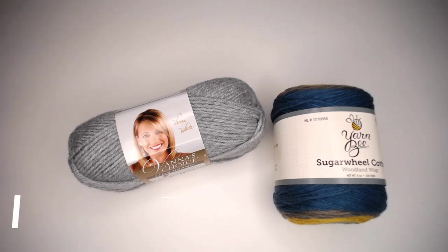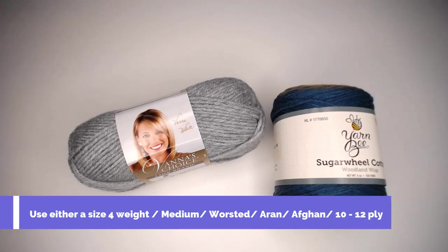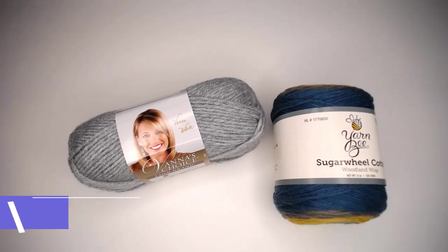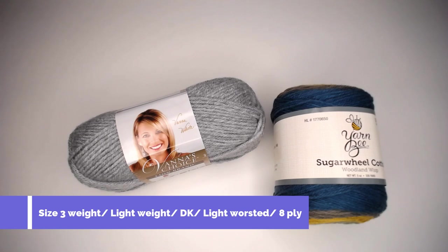The third tip is try to find a yarn that is either a size 4 weight, medium, worsted, aran, afghan, or a size 10 to 12 ply yarn. Depending on where you are in the world, this is how your skein or ball of yarn will identify what size it is. You could also absolutely use a size 3 lightweight DK or a size 8 ply yarn. That would work out great too.